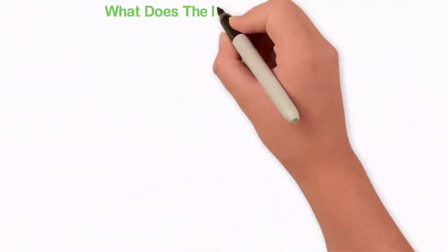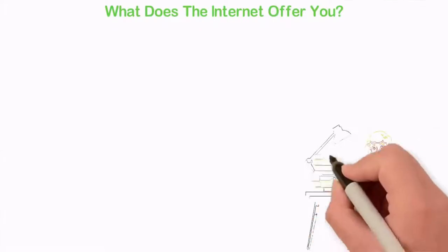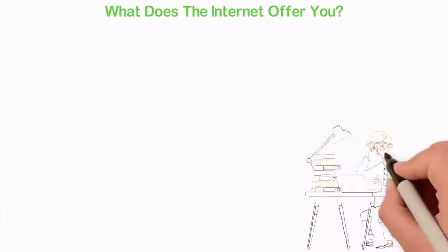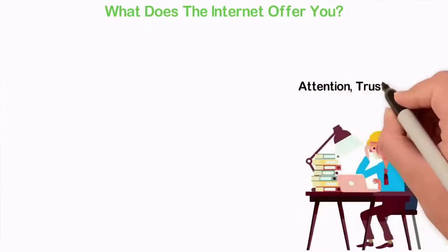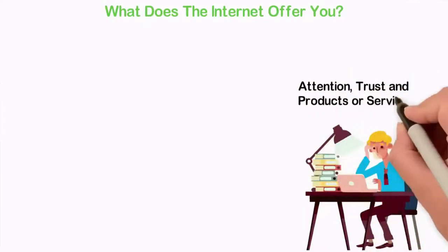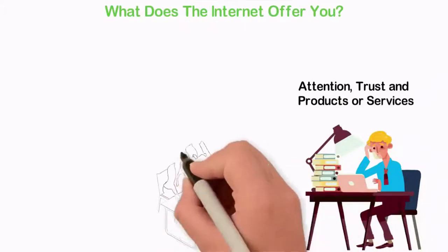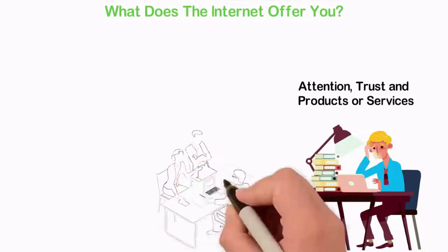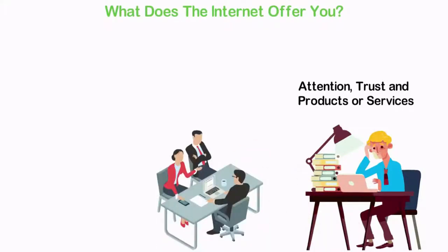What does the internet offer you? I've said it on this platform before and I'll have to repeat it because human minds forget things as fast as they hear it. To build a business, you need just 3 simple things. Those 3 things are attention, trust and products or services. With these 3 assets I mentioned above, anyone can build either a million dollar or a billion dollar company, depending on how big the 3 assets are.